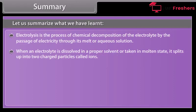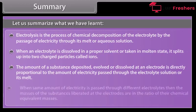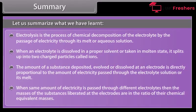The amount of a substance deposited, evolved, or dissolved at an electrode is directly proportional to the amount of electricity passed through the electrolyte solution or its melt. When same amount of electricity is passed through different electrolytes, then the masses of the substances liberated at the electrodes are in the ratio of their chemical equivalent masses.